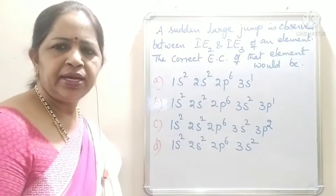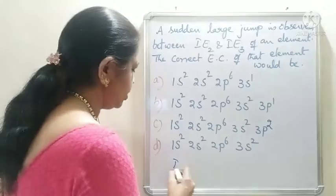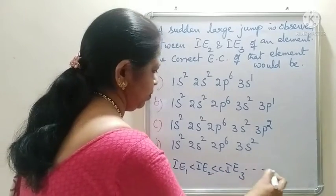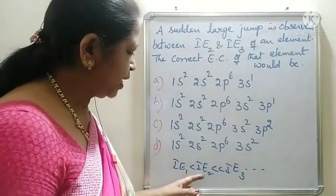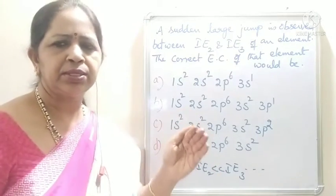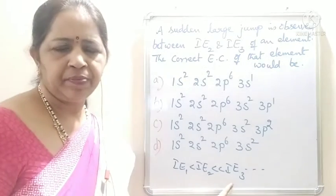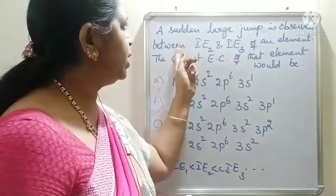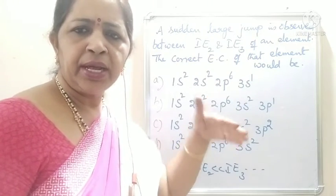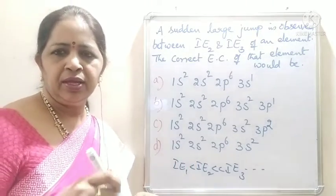We know that the second ionization energy is greater than the first. The order of ionization energies is IE1 less than IE2, which is still less than IE3, and so on. To remove the second electron, it requires a greater amount of energy than the first ionization energy — a gradual increase from first to second, second to third, etc. Now here, a large jump is observed between IE2 and IE3. The difference between second and third ionization energy is a very huge amount.